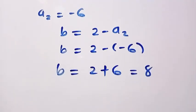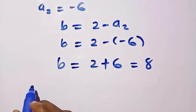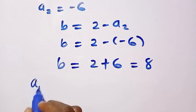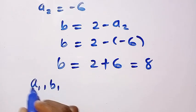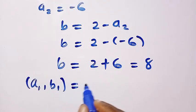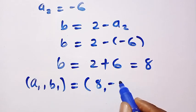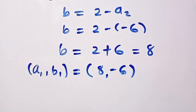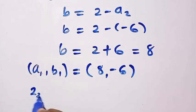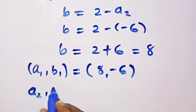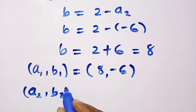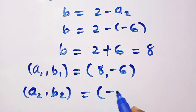And let me try and pair this together. We have a1 comma b1, so this equals 8 comma minus 6. And also we have a2 comma b2, this gives us minus 6 comma 8.